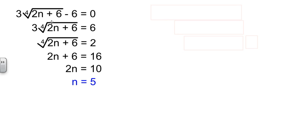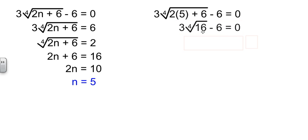So now n is 5. We have a candidate. Let's take it back, plug it in, and see what happens. 2 times 5 is 10. Plus 6 is 16. Simplifying this arithmetic. The 4th root of 16, according to my sheet from before, is 2. So I have 3 times 2 minus 6 is equal to 0. Well, 3 times 2 is 6. 6 minus 6 is 0. So yes, that's true. So n equals 5 is a valid solution.